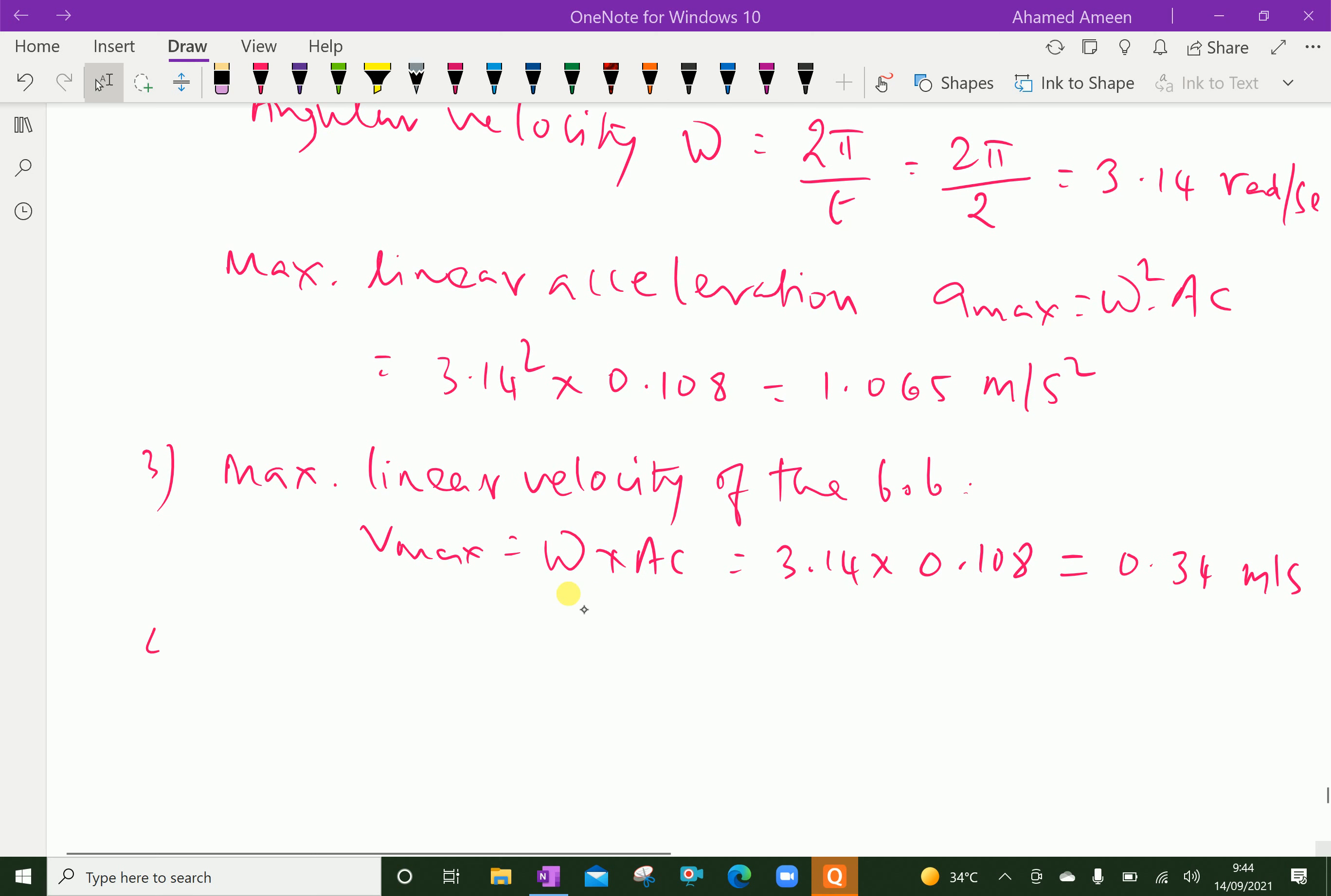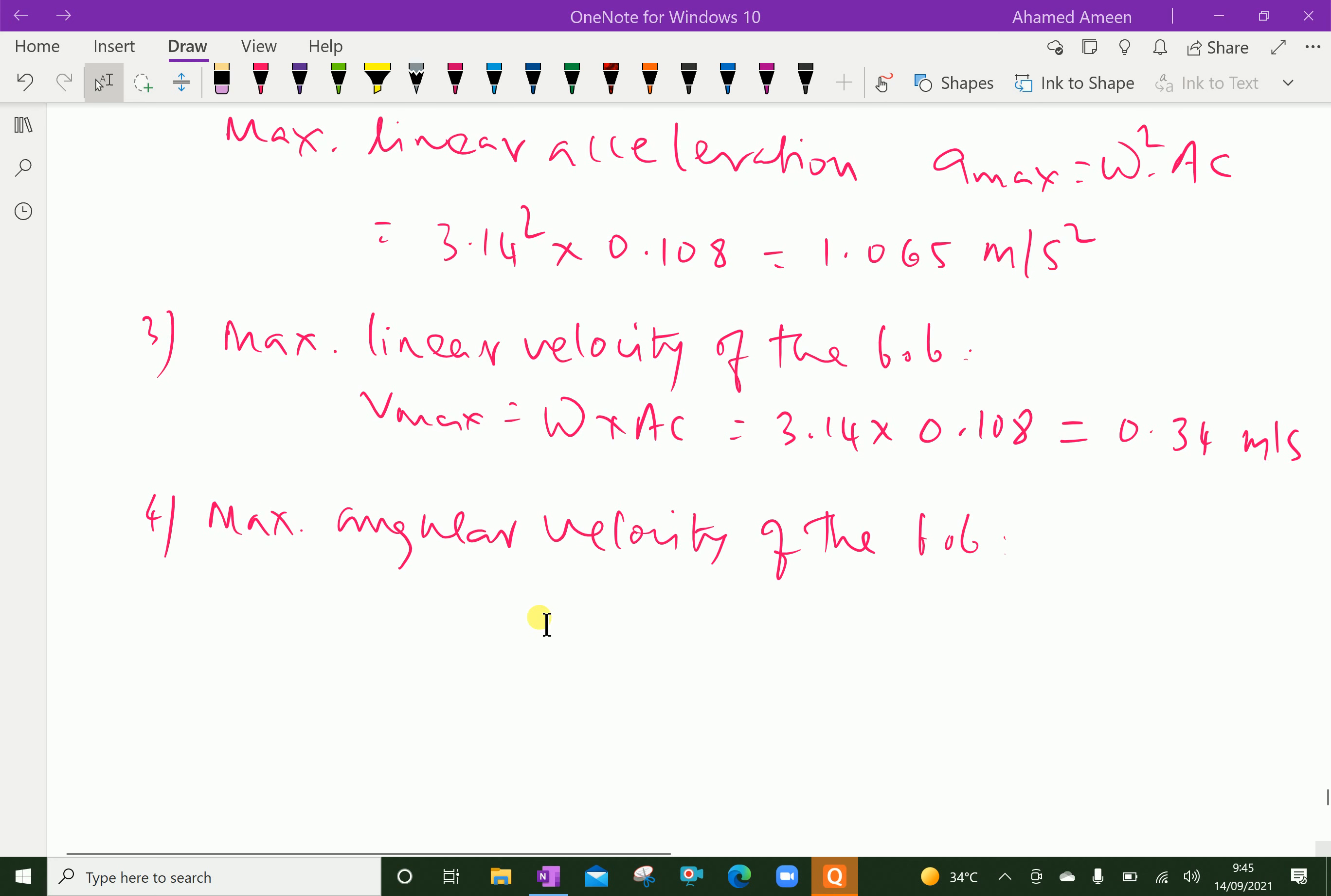Then fourth one, maximum angular velocity, angular velocity of the bob, equals V max over length of pendulum, that is 0.34 over 0.994, which equals 0.342 radian per second.